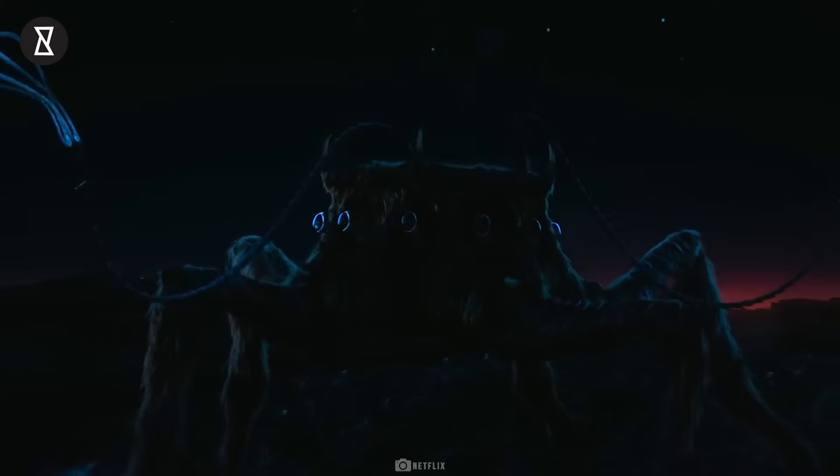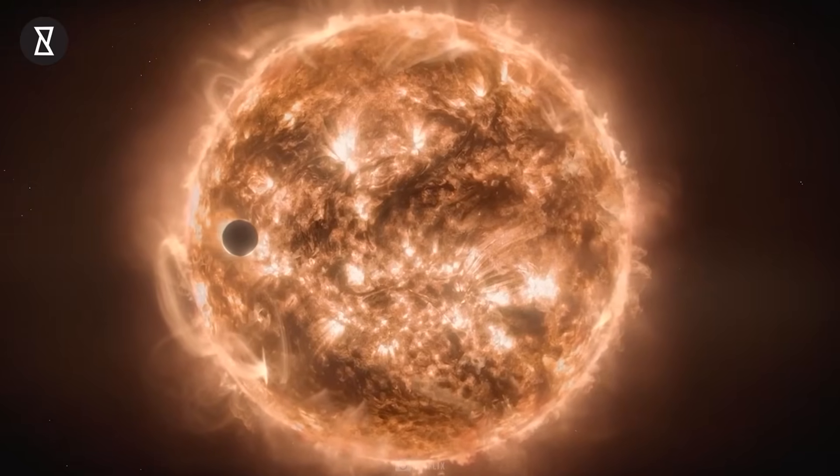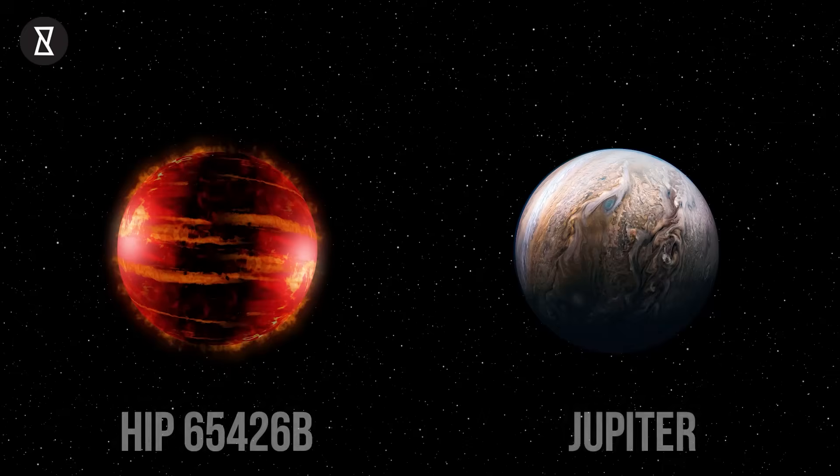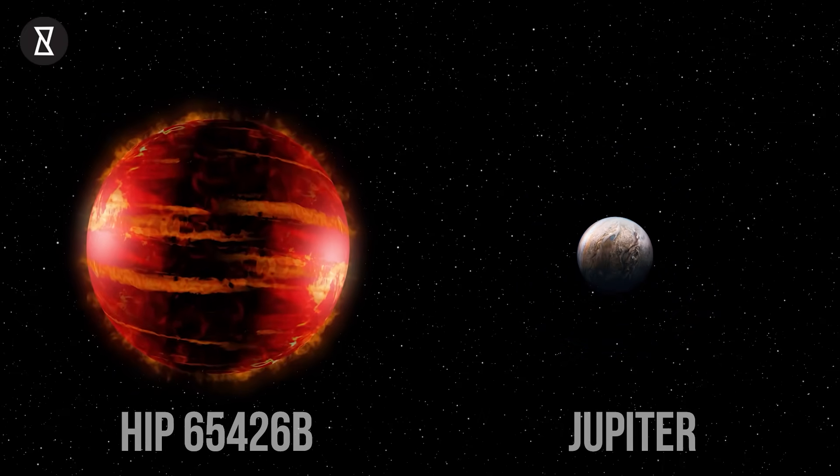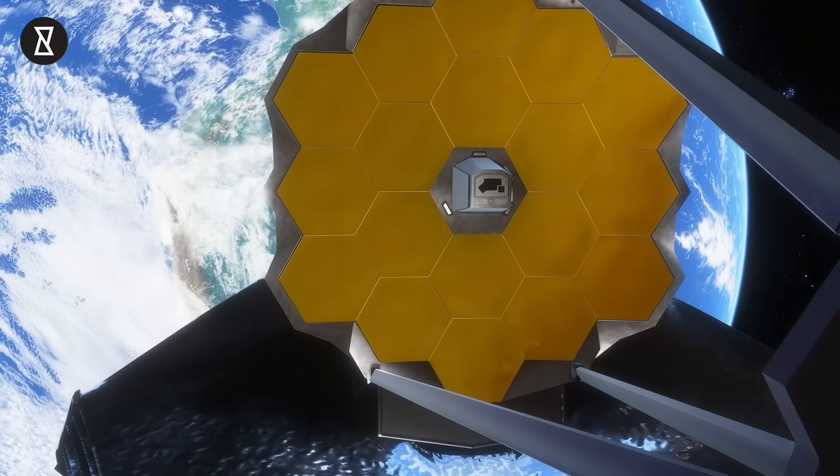Did you ever wonder what an alien world would look like? A star system, planets like Earth and Mars orbiting its star? Or a gas giant, the size of Jupiter? Or wait, how about a planet that is seven times bigger than Jupiter? Well, the James Webb Space Telescope has just returned its first ever picture of just that.